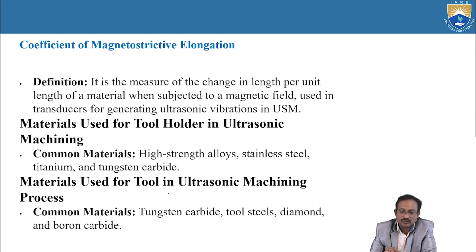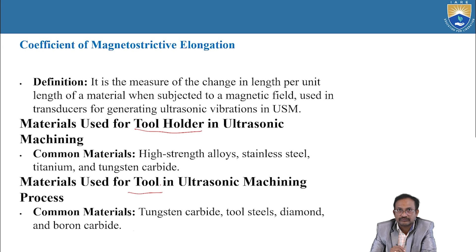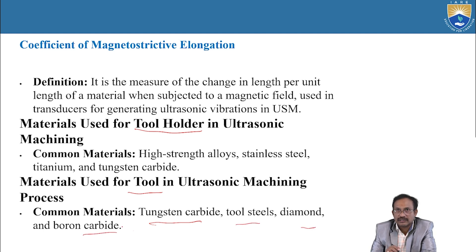Materials used for tools in ultrasonic machining process: common materials for the tool include tungsten carbide, tool steels, diamond, and boron carbide. All these are very hard materials.